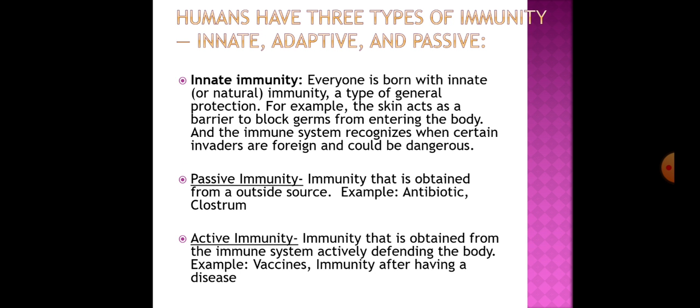Humans have three types of immunity. The first is innate immunity — everyone is born with innate immunity, a general type of protection. For example, the skin acts as a barrier to block germs from entering the body, and the immune system recognizes when certain invaders are foreign and could be dangerous.